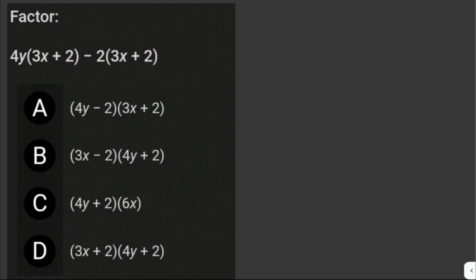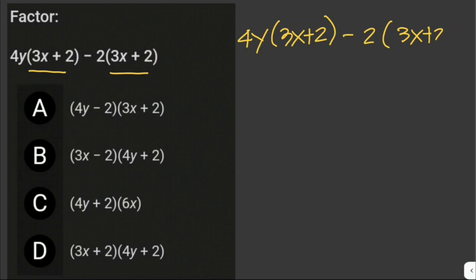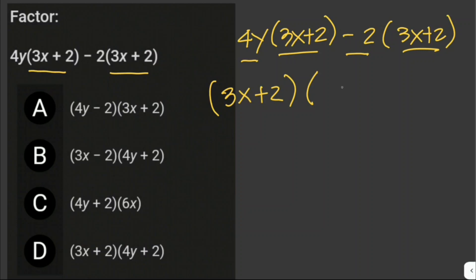Factor 4y times (3x plus 2) minus 2 times (3x plus 2). Any part of an expression common to every term can be factored out. In this case, the common term is (3x plus 2), so we factor it out. We put (3x plus 2) outside, and we're left with 4y and negative 2 inside, giving (3x plus 2)(4y minus 2). The answer is letter A.